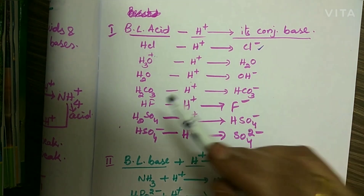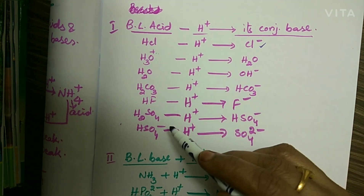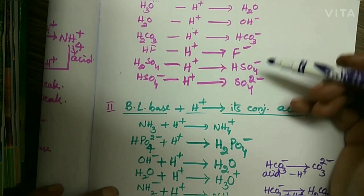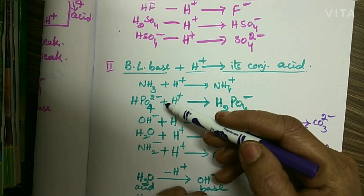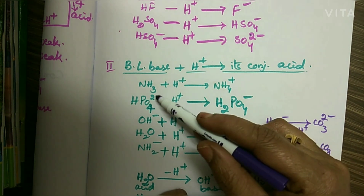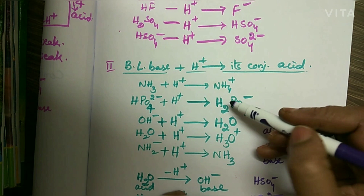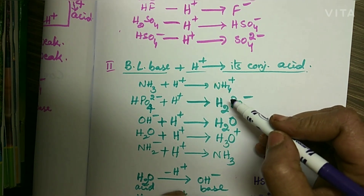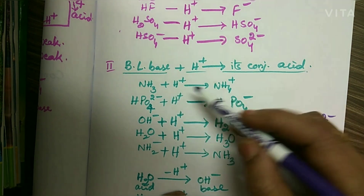For strong acids, their conjugate bases are weak. For weak acids, their conjugate bases are strong. Next, Bronsted-Lowry bases — a base is a substance which accepts the proton. These are all the bases which accept a proton to form their conjugate acids. Conjugate acids of Bronsted-Lowry bases have one proton more than the base.